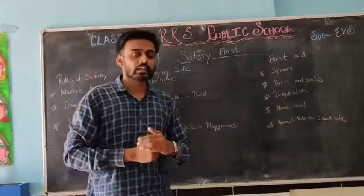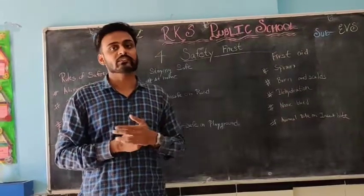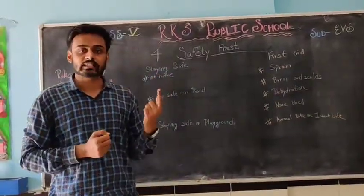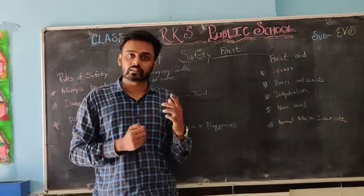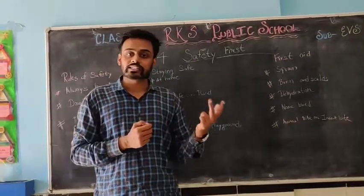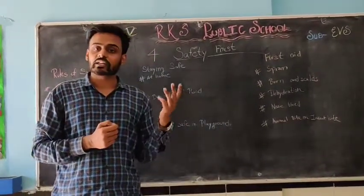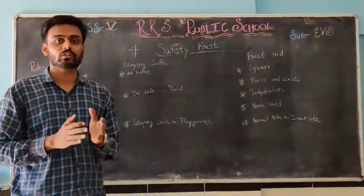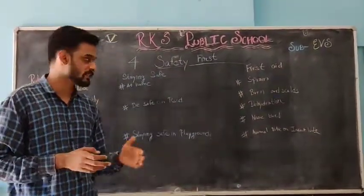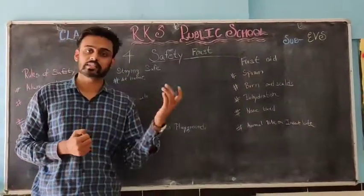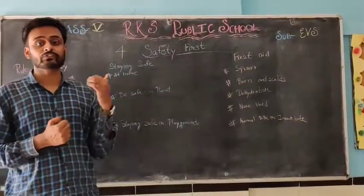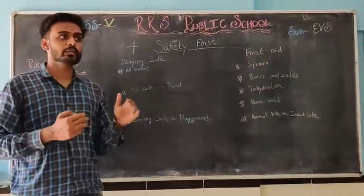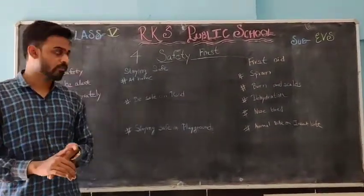As we know, most of the time we spend at home. But there are certain mishappenings that can happen, like a gas leak in the kitchen, burns or cuts, getting an injury or electric shock, spilling oil or water and slipping over it. These are the common mishappenings that happen at home. Another is leakage of gas, which should be immediately addressed.